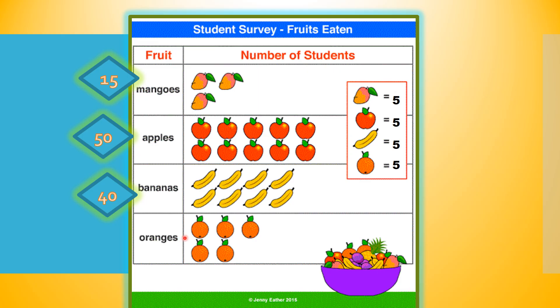Finally, we'll count the oranges by counting in fives. 5, 10, 15, 20, 25. 25 oranges have been eaten by this group of students.